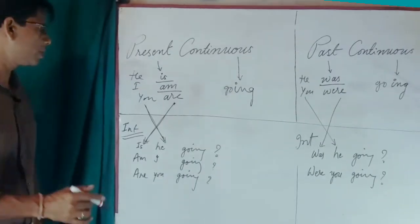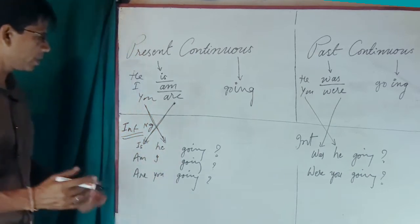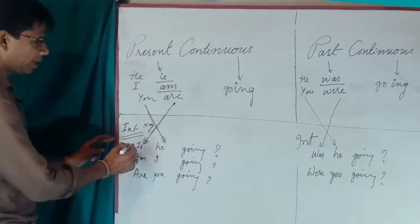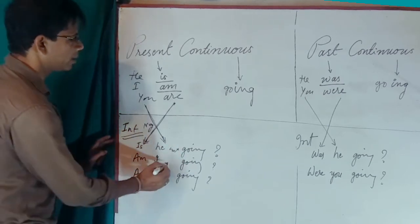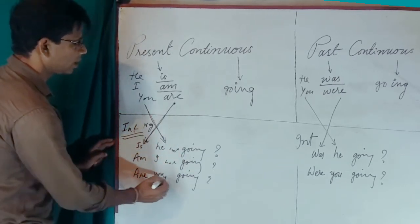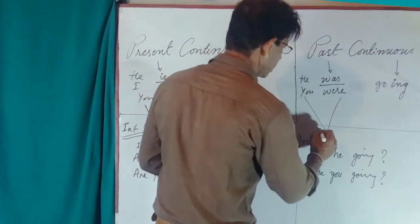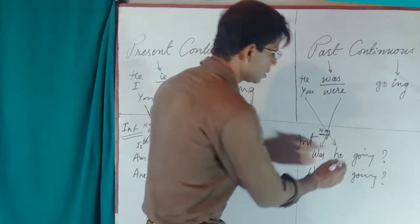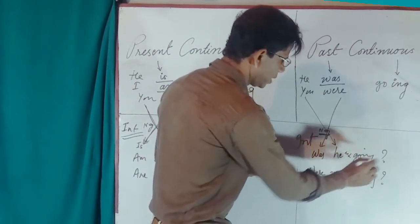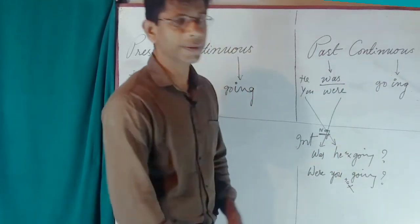For interrogative negative — present continuous — it's very simple: you just have to use 'not' in the third place. For example: is he not going? Am I not going? Are you not going? In the same way, for past continuous interrogative negative: was he not going? Were you not going?